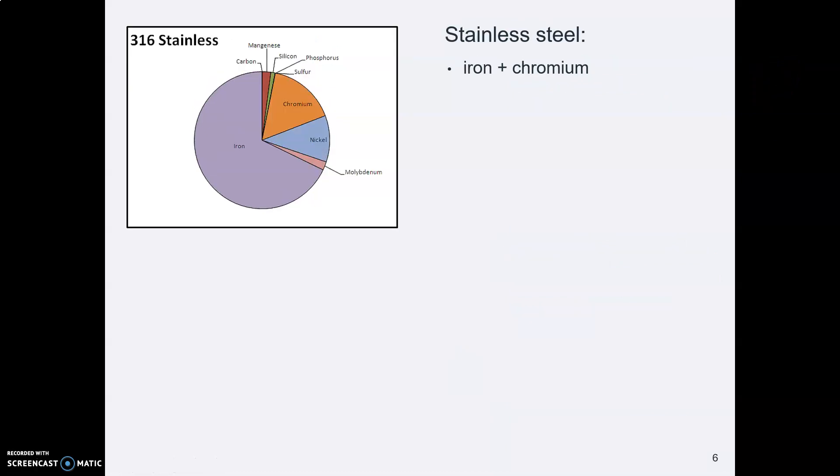Stainless steel also contains iron. Its primary other ingredient is chromium, which is why it is called stainless, it doesn't rust. But it also contains carbon and a bunch of other stuff.